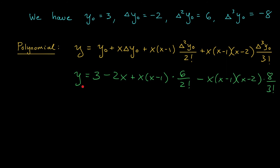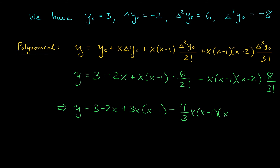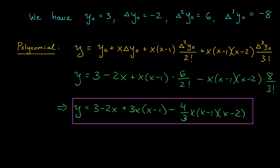Now you could probably just leave your final answer like this and it would be fine, but it does feel a little bit wrong not to simplify these coefficients. So I'm going to go ahead and do that. I get a final answer of y equals 3 minus 2x plus 3x times x minus 1 minus 4 thirds — that's what this coefficient simplifies to — times x times x minus 1 times x minus 2. Leaving your answer in this form is totally fine; there's no need to expand and collect like terms. This is our interpolating cubic.